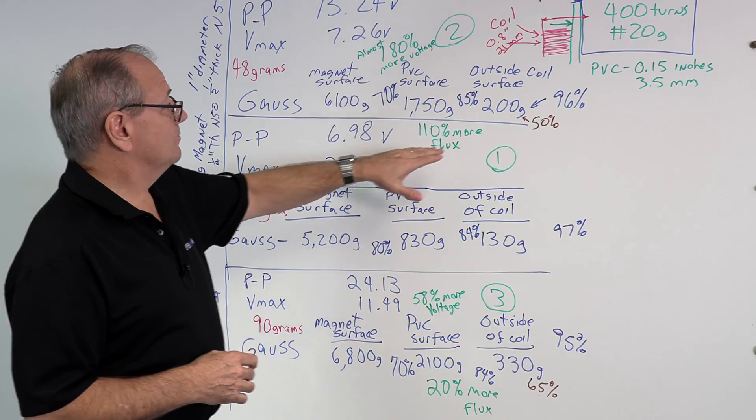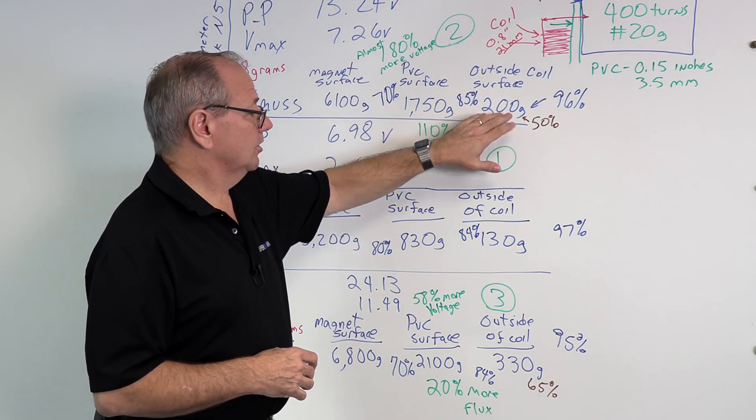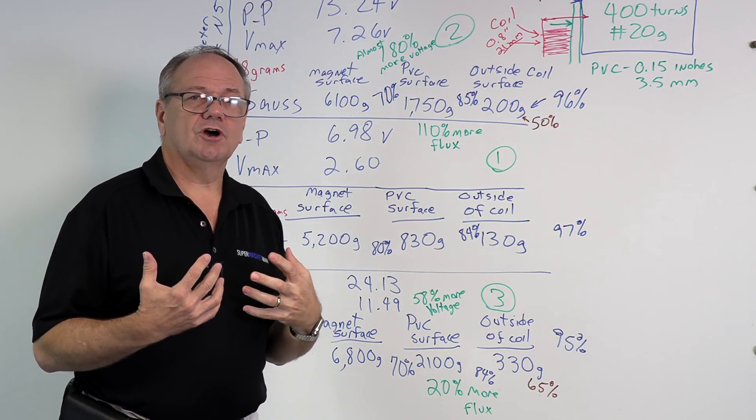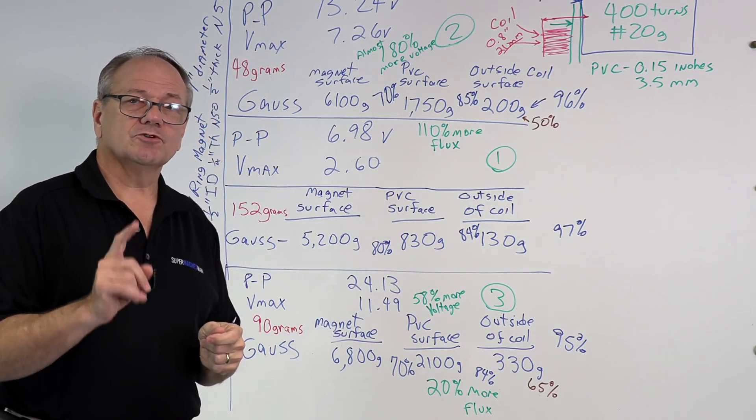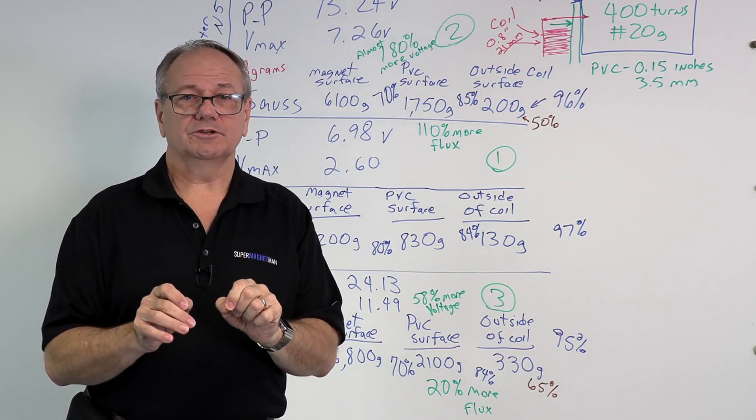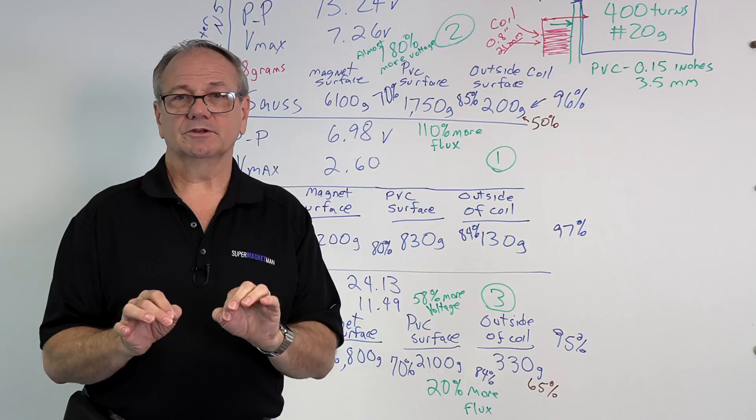These are huge losses before we even start energizing the coil. And when you get to it, by the time you get to the outside coil, you have lost 96 to 97% of your total energy available. So our first design objective would be to minimize wall thickness. Remember that, we want to minimize wall thickness.